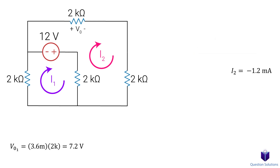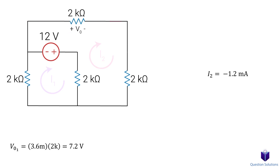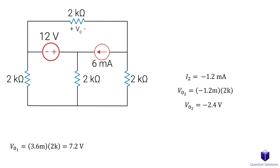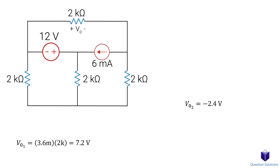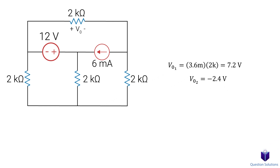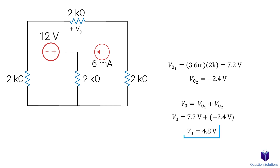That doesn't matter right now, since we're given the positive sign of V0 to be on the left side. So the question is assuming the current is flowing left to right, in other words clockwise. Let's find the voltage by multiplying the current by the resistance. We get negative 2.4 volts, and that's because we're given the positive side of the resistor to be on the left, but the current actually flows right to left. Now all that's left is to add our two voltage sources together. So the voltage of the resistor with both sources in the circuit is 4.8 volts, and that's our answer.